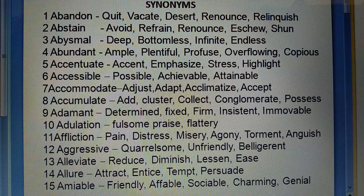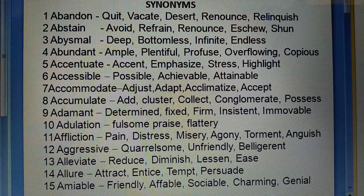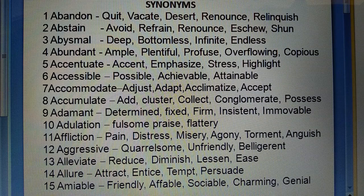Ninth: Adamant (ideal, determined) — determined, fixed, firm, insistent, immovable. Tenth: Adulation (kisi ki zarurat se zyada tarif karna) — fulsome, praise, flattery. Eleventh: Affliction (nirashaа, pain) — distress, misery, agony, torment, anguish. Twelfth: Aggressive (ladaaku, gusse mein aane wala) — unfriendly, belligerent.